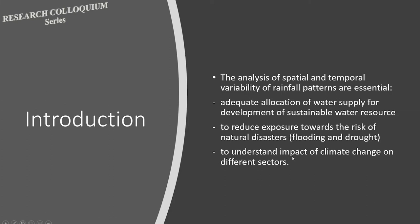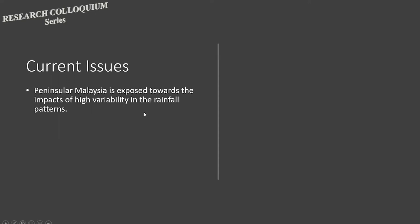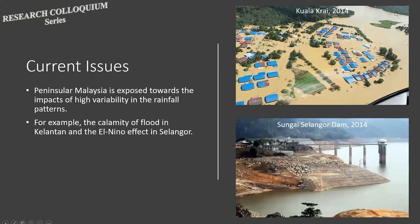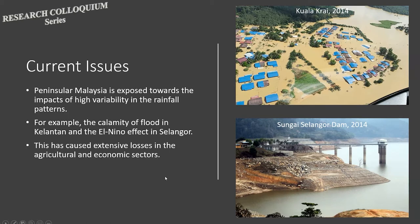Lastly, it is important to understand the impact of climate change on different sectors such as agricultural, social, economic, and environmental factors. Looking at the current situation in Peninsular Malaysia — due to the direct impacts of rainfall variability, in 2014 Kuala Krai in Kota Bharu encountered severe flooding. On the contrary, Selangor experienced a dry spell, with Sungai Selangor Dam reaching a very critical water level. Extreme or lacking rainfall had caused extensive losses especially in the agricultural and economic sectors.